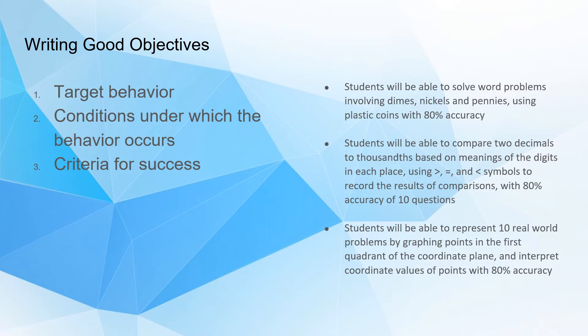A good objective should have three parts. The first part is the target behavior you want to have happen. The second part is the conditions under which students are going to do that behavior. The third part is your criteria for success — what's passing. For example: students will be able to solve word problems using dimes, nickels, and pennies. The conditions are to use plastic coins, and the criteria for success is 80% accuracy.